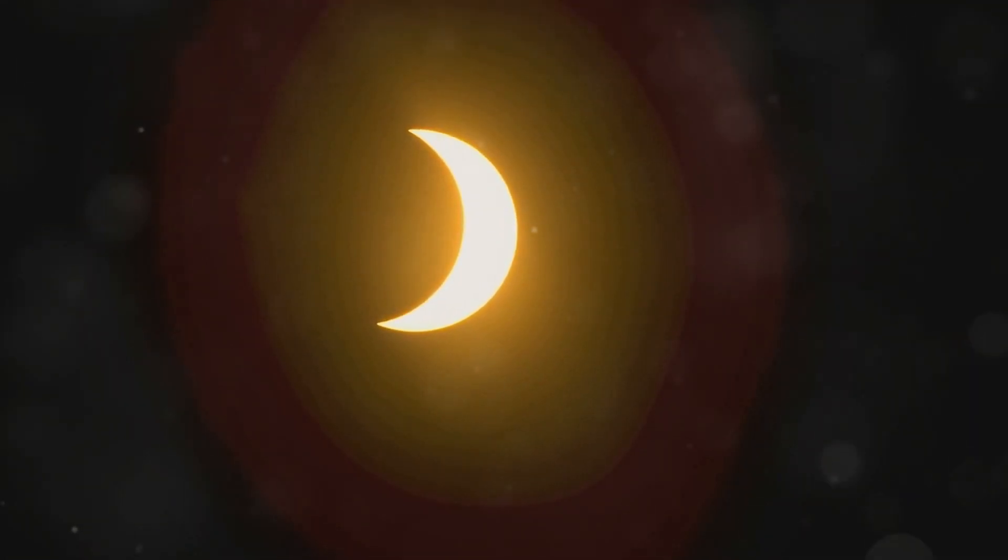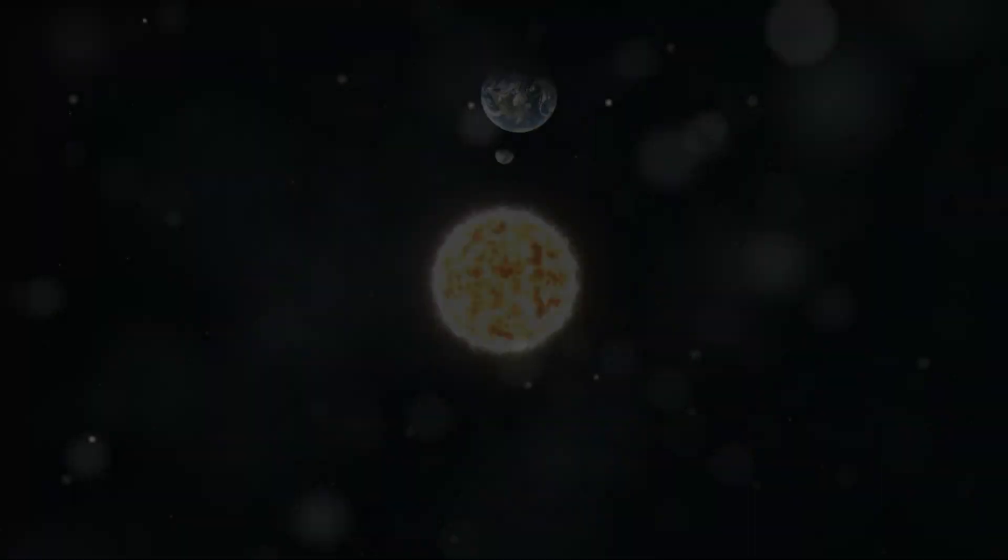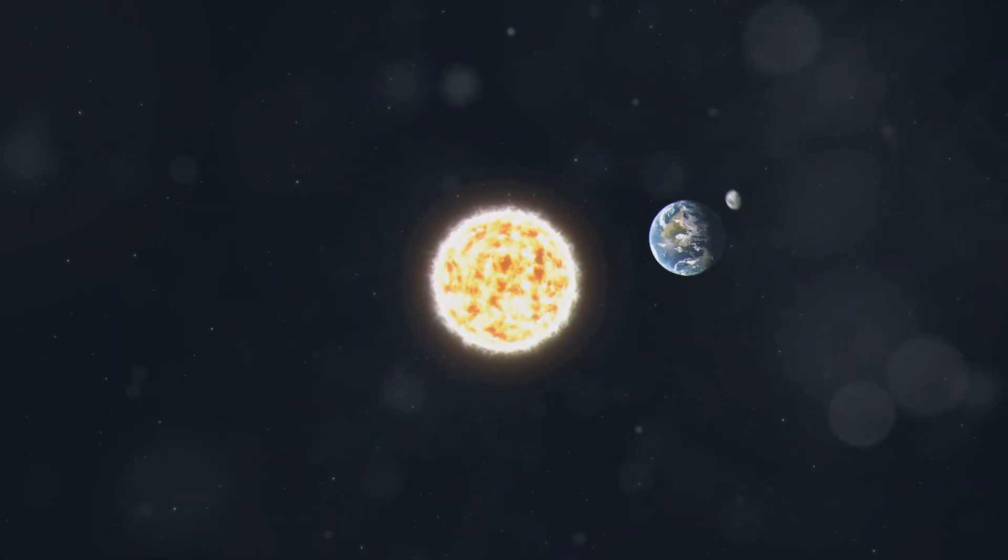This precise alignment is what makes solar eclipses so rare and fascinating. That's why solar eclipses are so special. They are a cosmic coincidence that we get to witness. They remind us that even in space, timing is everything. The dance of celestial bodies is a beautiful and intricate performance.